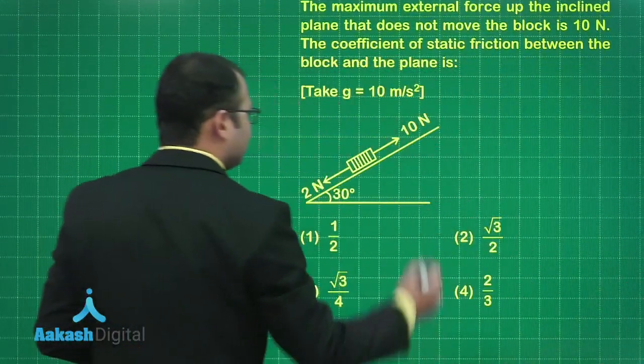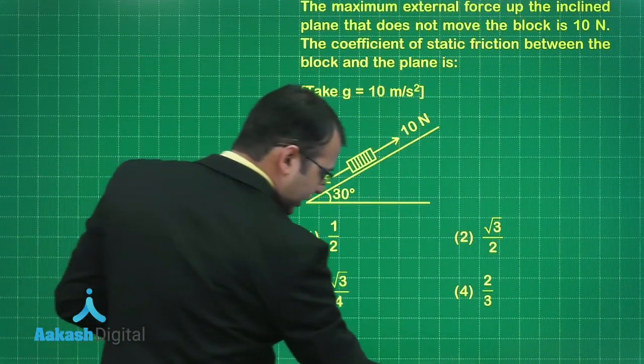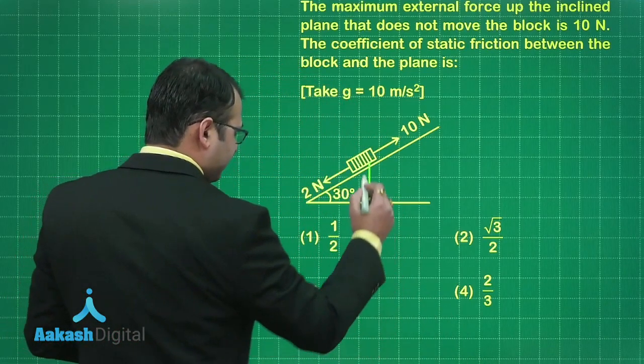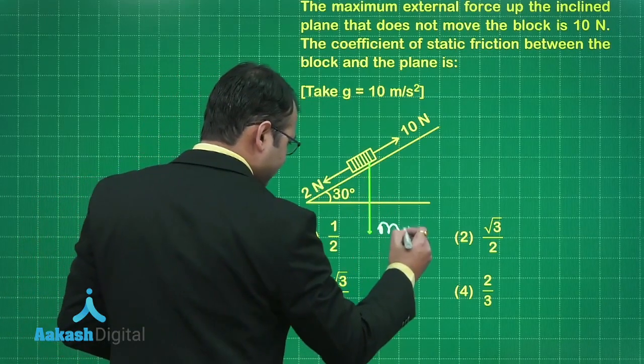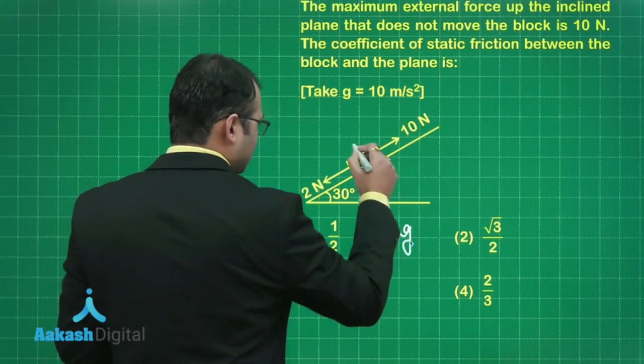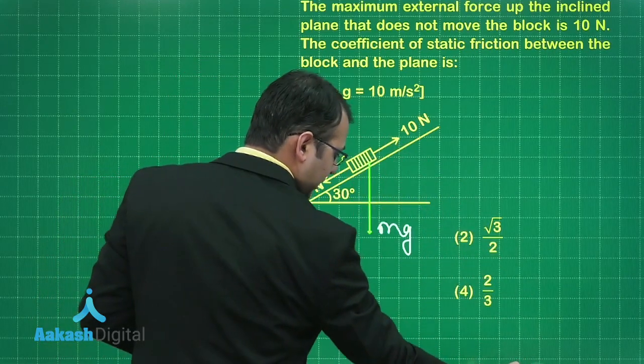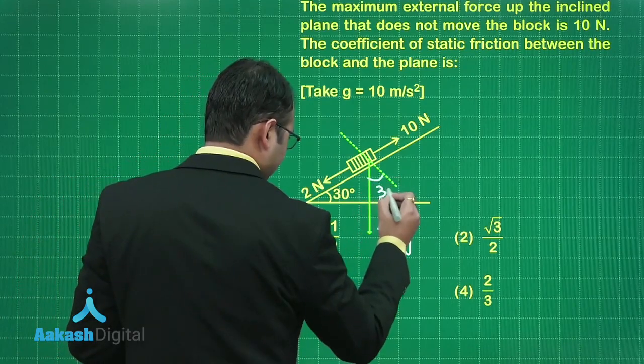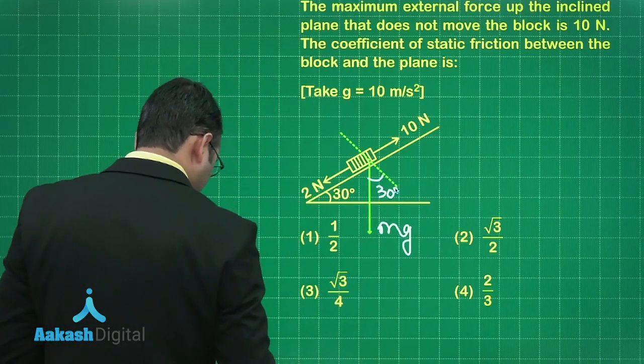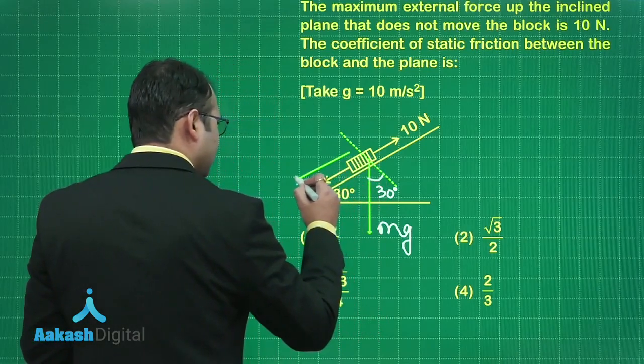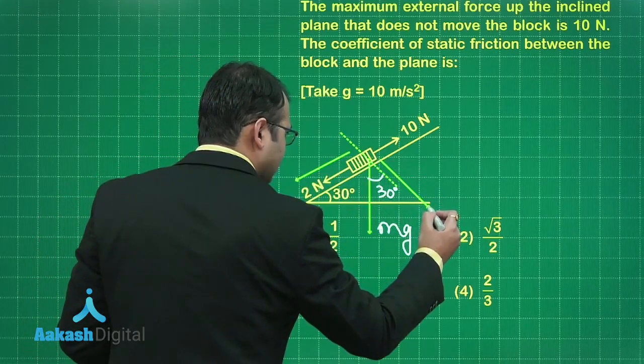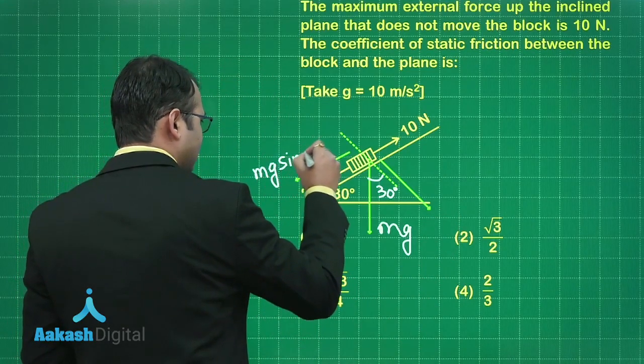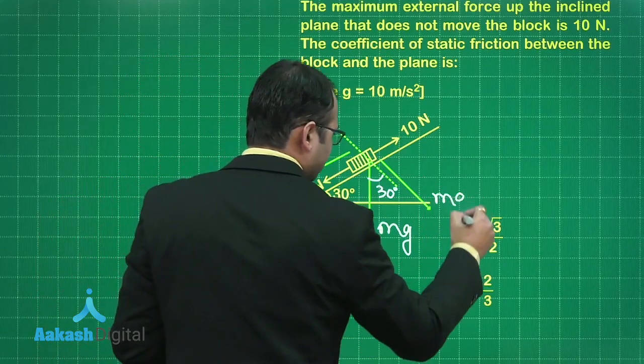Let's see the case when you forget this one. The weight will be acting downwards. If I resolve this weight, mg, and if this is 30 degrees, with the vertical it will be making an angle of 60 degrees. So this would be 30 degrees. There's one force acting in this direction and one perpendicular to the incline.